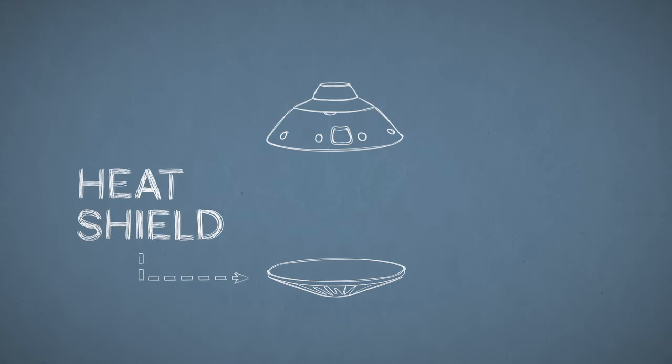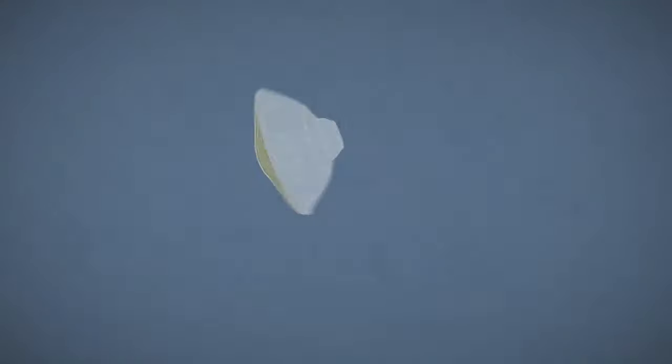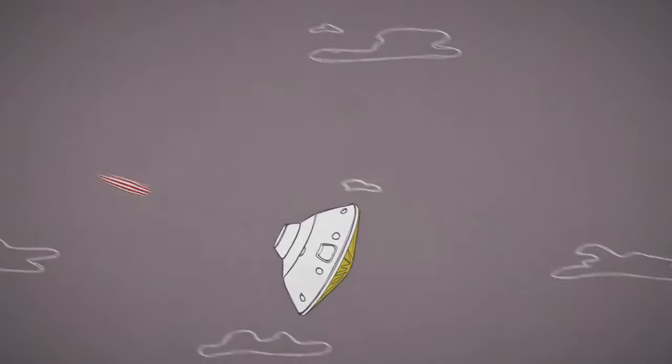First, your capsule needs a heat shield. It protects the spacecraft inside from the heat and friction of entry into the atmosphere. Friction slows you down over 90%, but not enough to land safely.